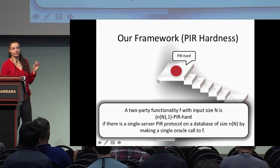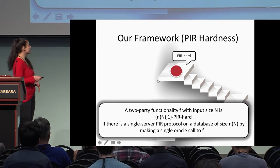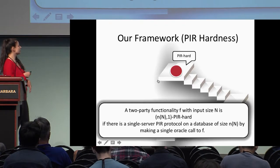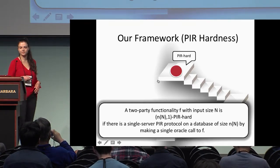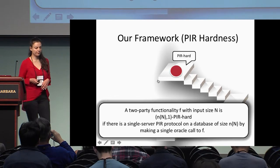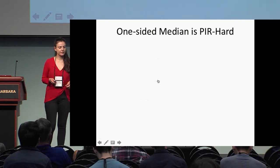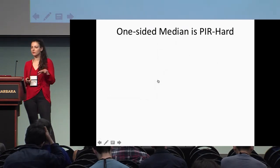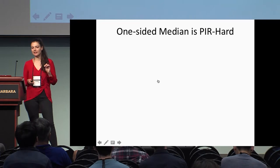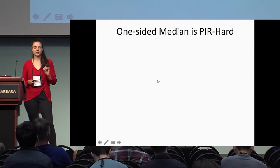If a problem is PIR-hard, it inherits all the bad consequences that PIR has, like bad computational complexity. This is the simplest notion in our paper: a two-party functionality is PIR-hard if there is a single-server PIR protocol on a database of size n making a single call to the function f. And we can extend this notion to multiple calls.